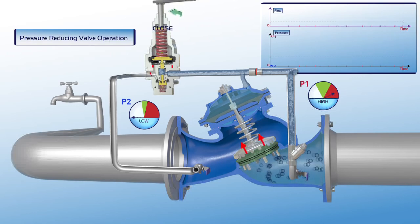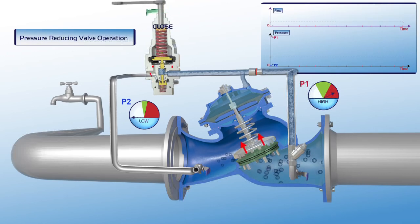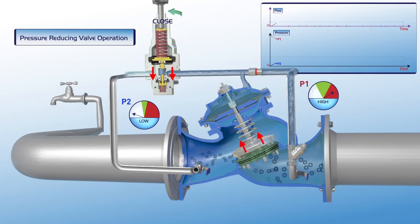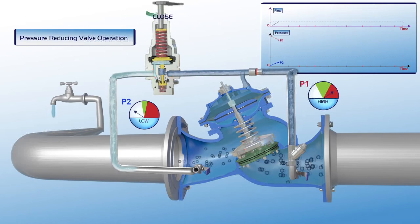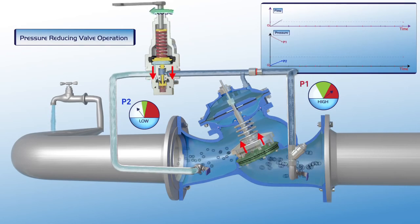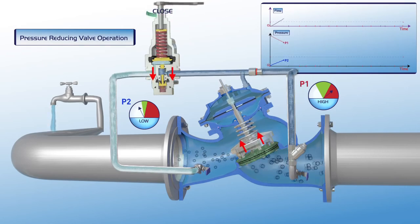The user gradually turns the pilot adjusting bolt clockwise. The pilot plunger is pushed downwards, causing a pressure drop in the valve's upper control chamber. This results in the gradual opening of the valve and filling of the consumer line.